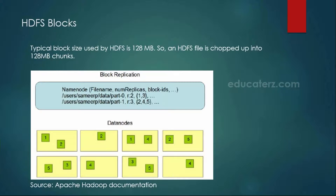In this diagram you can see multiple data nodes are available and the top one is your name node. The name node consists of the metadata information — that means it consists of all the block locations and also the replication factor. For the first file, the replication factor is R2, meaning two replicas will be created. For the part 1 file, R3 — meaning the default replication is 3.